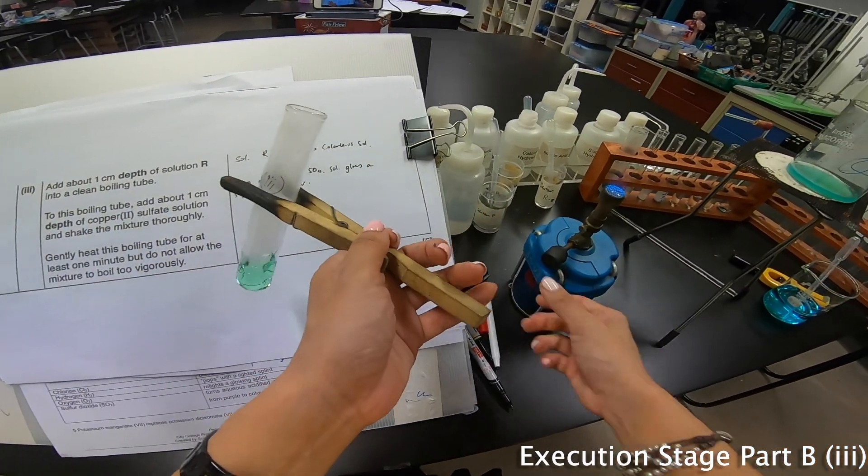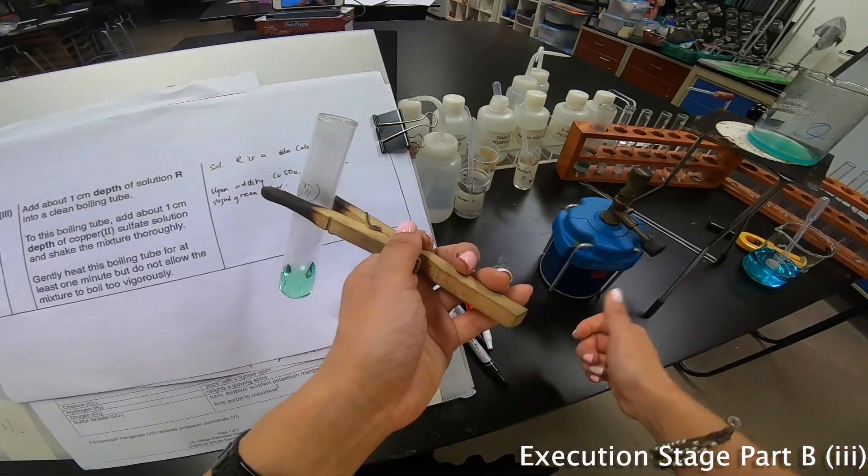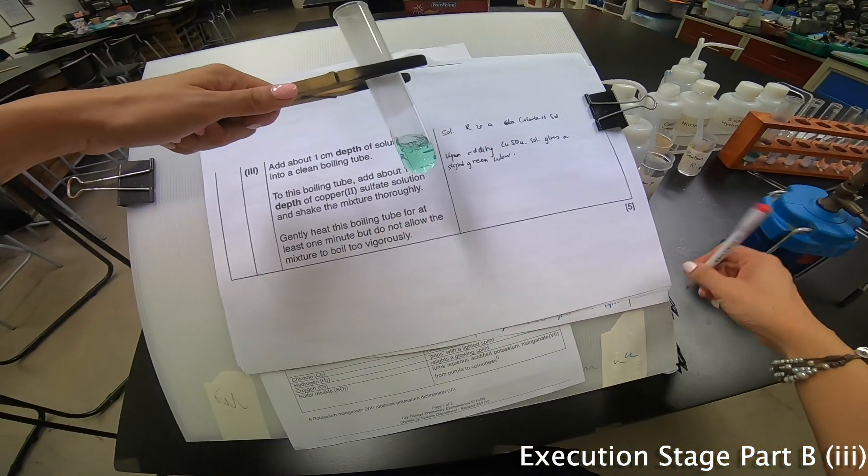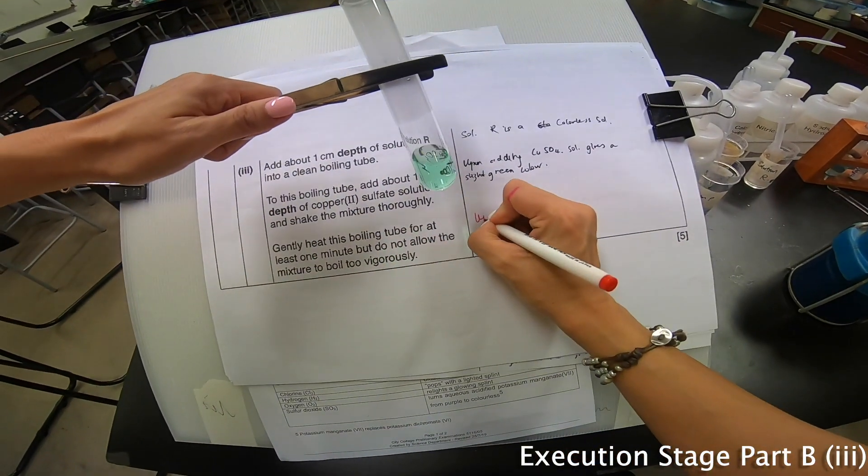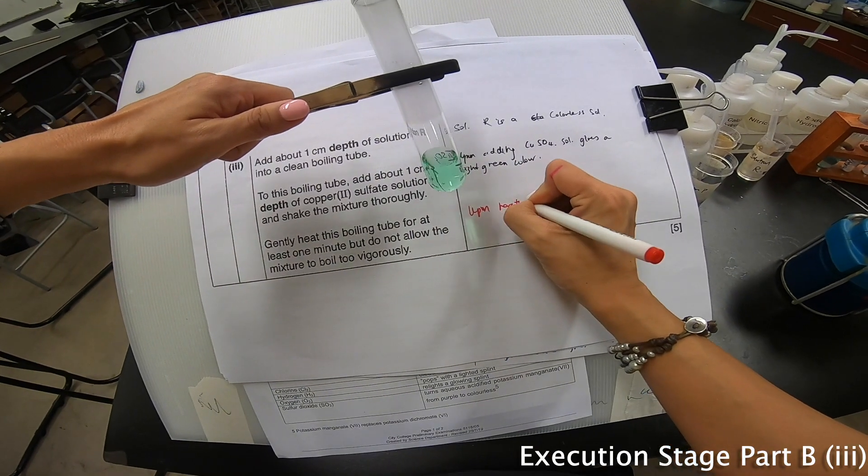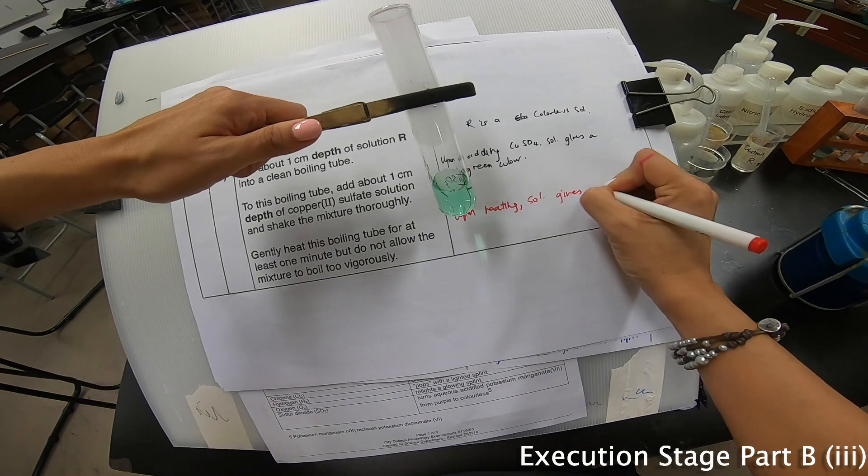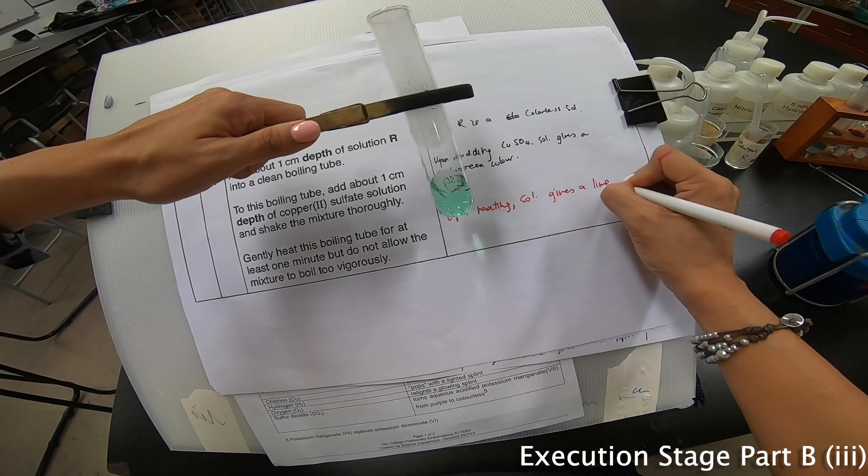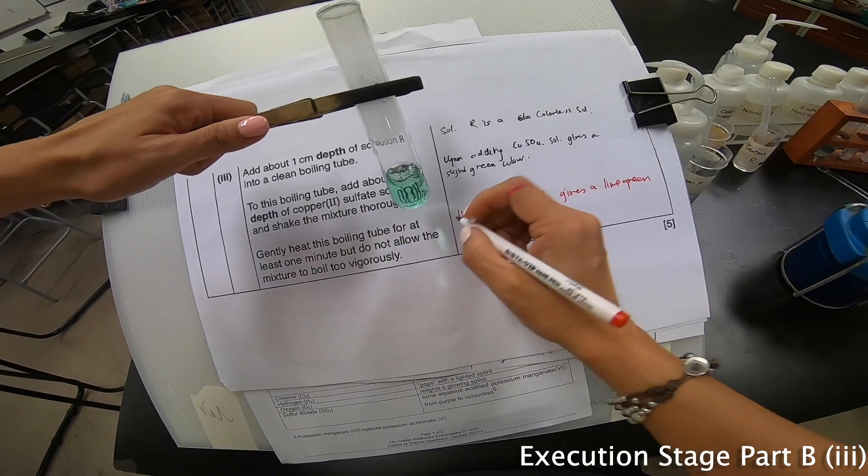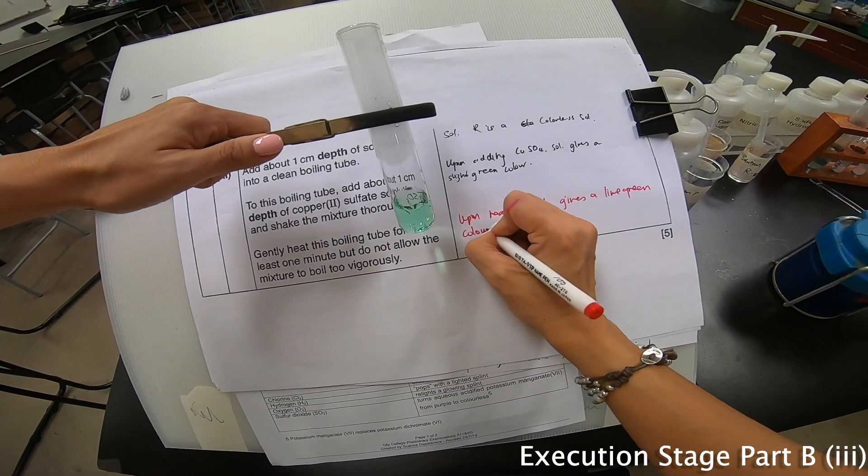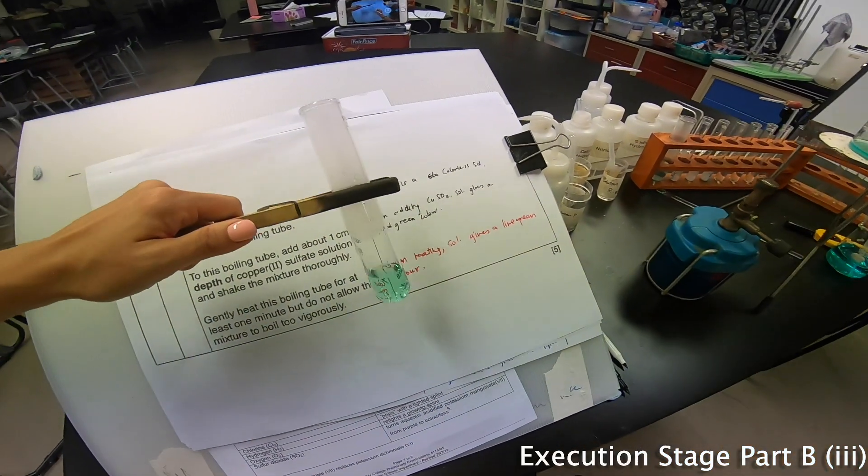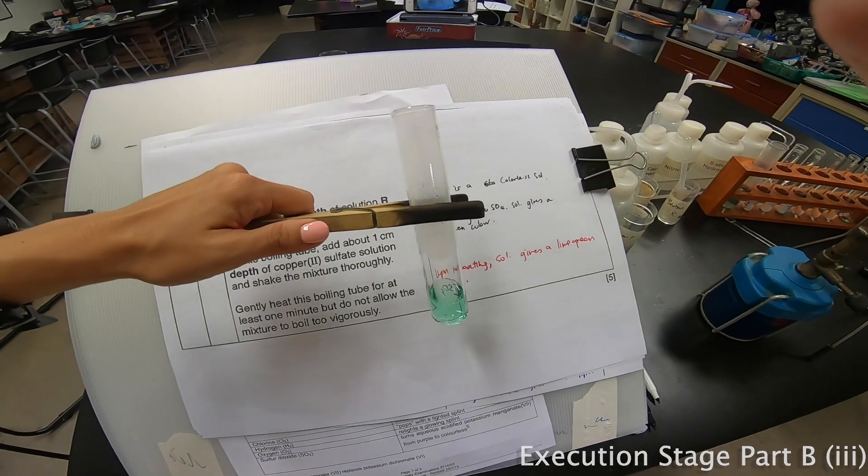I really hope that the camera can capture it because it look like lime green to me right now. And it's so lime green. Oh I really hope that you can see it because from my eye it can see so clearly. It can see so, oh brilliant, brilliant. Oh this is so good, this is fantastic. Upon heating, solution gives a lime green color. Voila, I'm happy with this. We have finished all the execution.